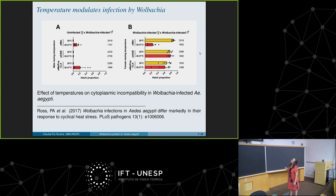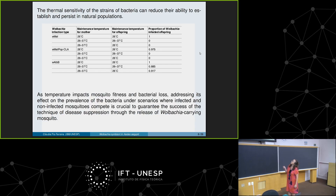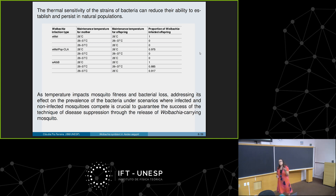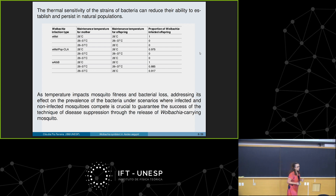Temperature also affects bacterial transmission. For a given strain at fixed temperatures, all offspring are infected, but if you increase temperature beyond a threshold, there is no infection of the eggs — it's really sensitive to temperature. Some strains are more sensitive than others. This is a key decision when releasing infected mosquitoes: which strain to use. We then propose a mathematical delay differential model, inspired by this work. Since temperature changes all aspects of the mosquito life cycle — development, mortality, oviposition — we make all mosquito parameters temperature-dependent.